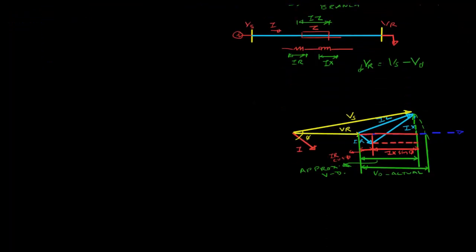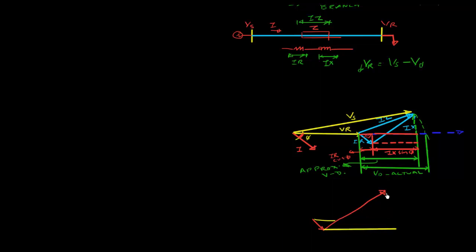To understand why: looking at the triangle, the angle phi is the power factor angle. Since I is in phase with I·R, this same angle phi appears in the triangles formed by I·R and I·X. Redrawing: I·R is one side, I·X is 90 degrees to that.